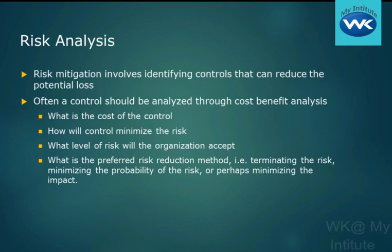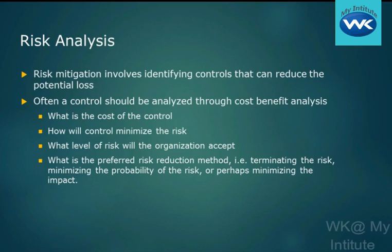Often a control should be analyzed through a cost-benefit analysis, meaning what's the cost of that control? I threw out a couple of examples: another server with another database running on it — that sounds expensive. We've got the license of the server, license of the database server, the cost of the hardware, the cost of the people to put it in, to train them, to maintain it. Then I had another one that was a RAID array — just a little rack with a lot of hard drives. We can start comparing costs and ask: how will this one control minimize the risk? How will this other one minimize the risk? And will either of them minimize the risk to a level that the organization is willing to accept?